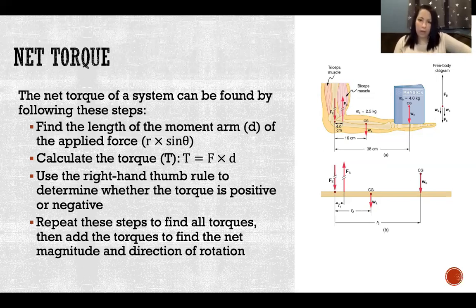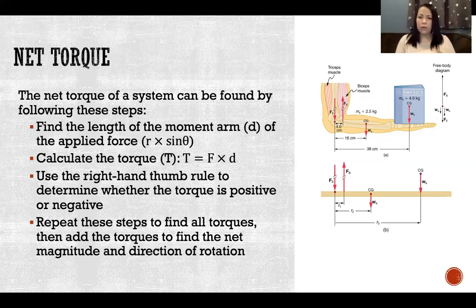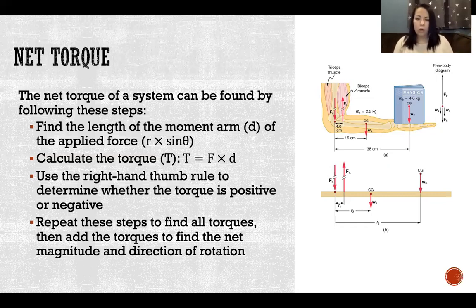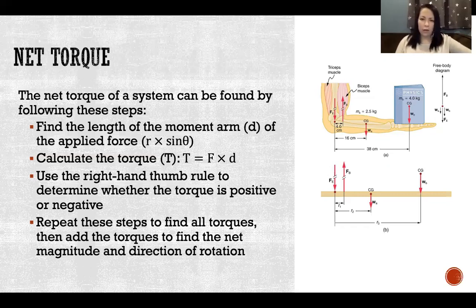Find the torques for all forces acting on the segment — the torque for each muscle, the torque for the weight of the forearm, the torque for the center of gravity of any object being held. In this picture, we'd calculate the center of gravity of the forearm and the center of gravity of the book the person is holding. We calculate all these different torques for every force acting on the segment, determine which ones are positive and negative, add them all together, and get the net torque for that system.